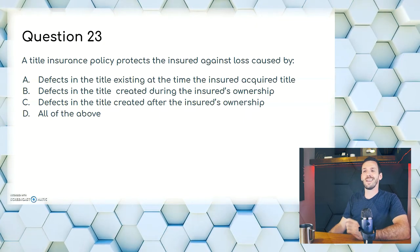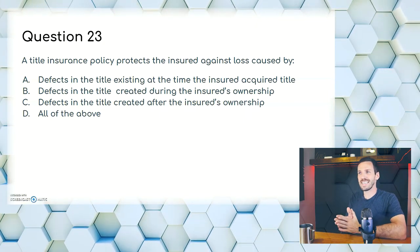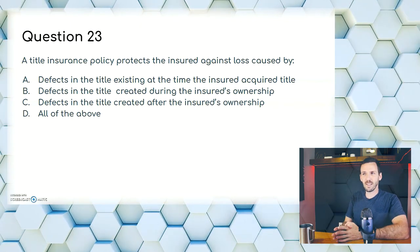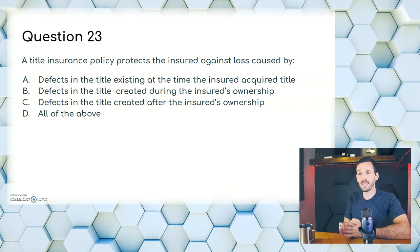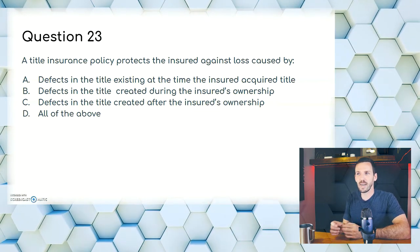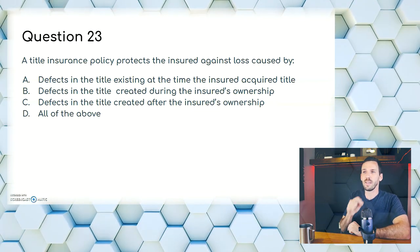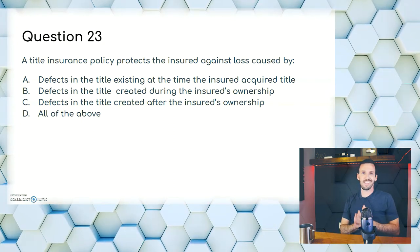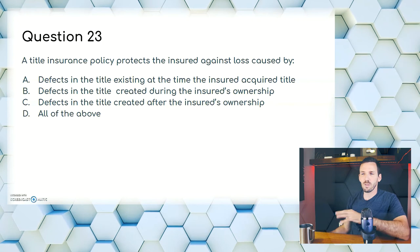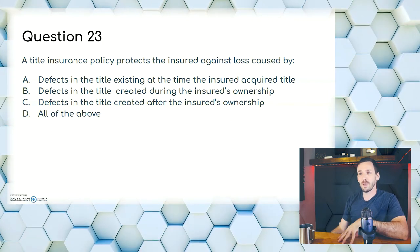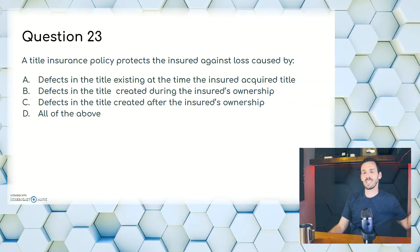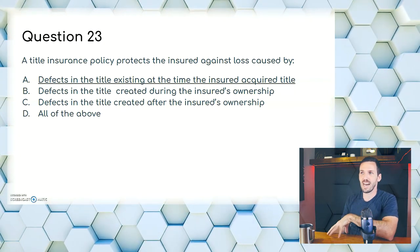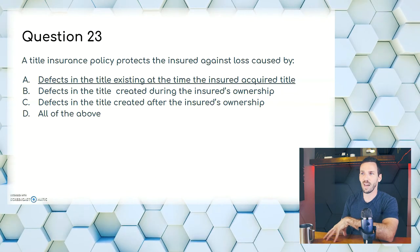Question twenty-three: a title insurance policy protects the insured against loss caused by — A, defects in the title existing at the time the insured acquired title; B, defects created during the insured's ownership; C, defects created after the insured's ownership; or D, all of the above. Title insurance is typically about previous moments in history. The answer is A — defects in the title existing at the time the insured acquired title.